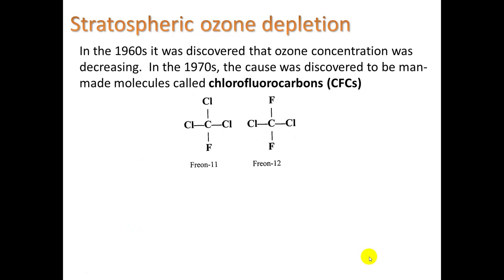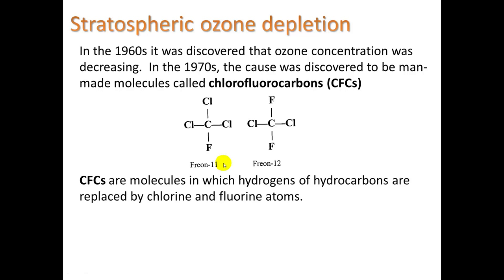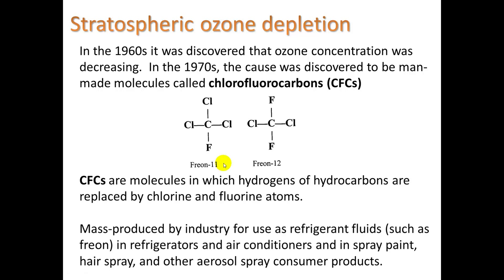Ozone is depleted by chlorofluorocarbons. Here are two examples: Freon 11 and Freon 12. You'll notice they are carbon-based molecules — in the middle you have a carbon, and then some fluorines and some chlorines. Depending on the ratio of them, we have different names. These are both used as refrigerants in refrigerators and air conditioning units, and they are mass-produced by industry.